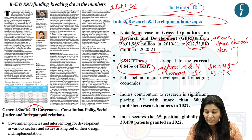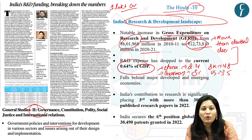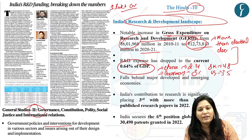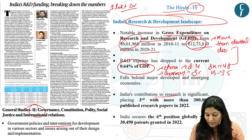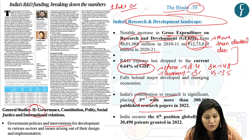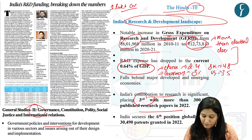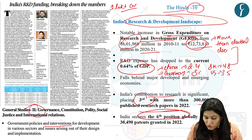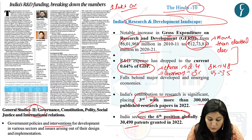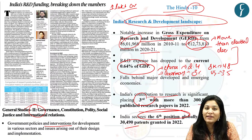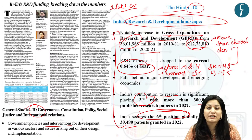India's contribution to research is quite significant — it is placed at third position with more than 3 lakh research papers in 2022, showing a strong research environment. India also secures sixth position with 30,000 patents granted in 2022, reflecting its evolving innovation landscape. These facts can be used to enhance the quality of mains answers.